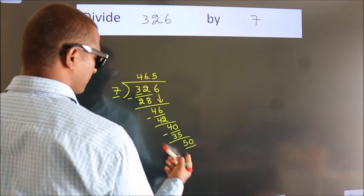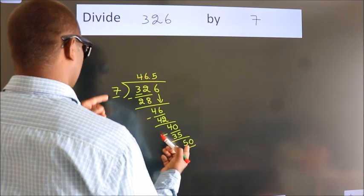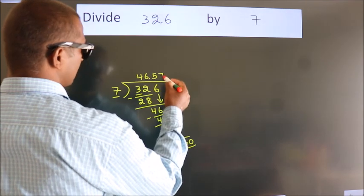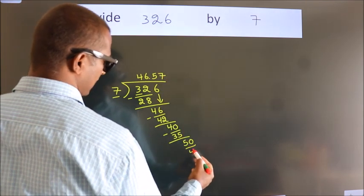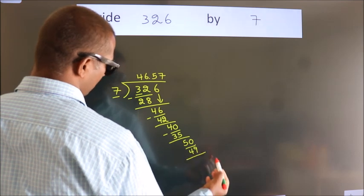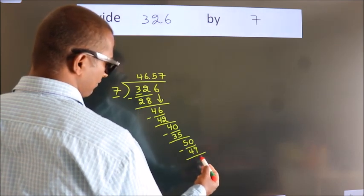50. A number close to 50 in the 7 table is 7 times 7, 49. Now we subtract. We get 1.